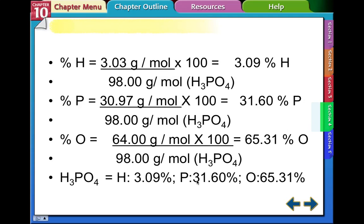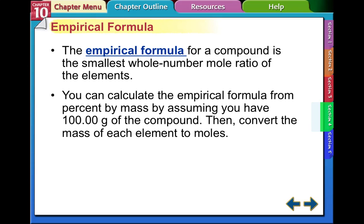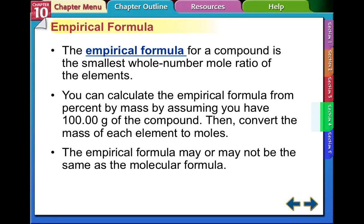So hydrogen is about 3%, phosphorus is basically 32%, and oxygen is 65%. These percents all need to add up to 100. Next, we're going to look at empirical formula. The empirical formula for a compound is the smallest whole number mole ratio of the elements in that compound. You can calculate the empirical formula from the percent by mass by assuming that you have 100 grams of the compound, then convert the mass of each element to moles. The empirical formula may or may not be the same as the molecular formula.